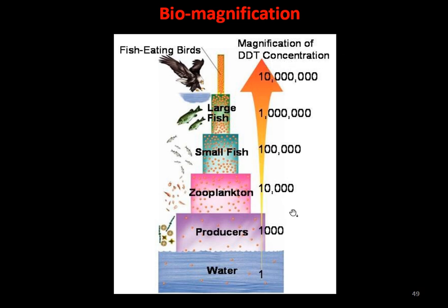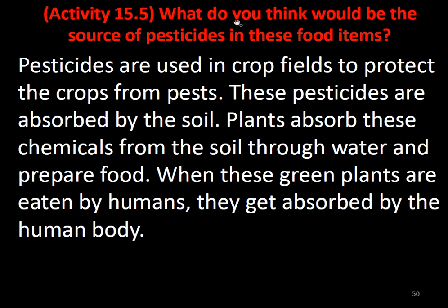What would be the source of pesticides in food items? Pesticides are used in crop fields to get rid of pests. These pesticides are absorbed by the soil, and plants absorb these chemicals from the soil through xylem and phloem — xylem is a water-conducting tissue. When these green plants are eaten by humans, the chemicals get absorbed by the human body and accumulate there.